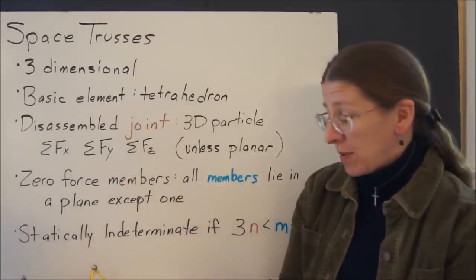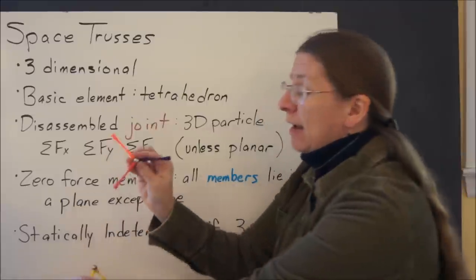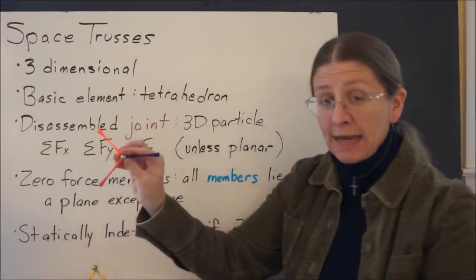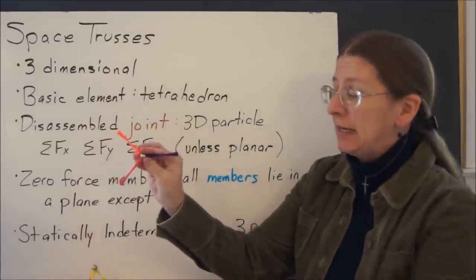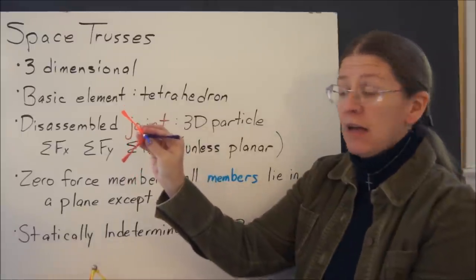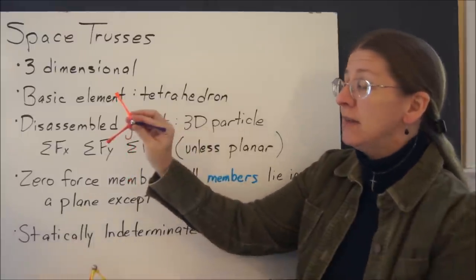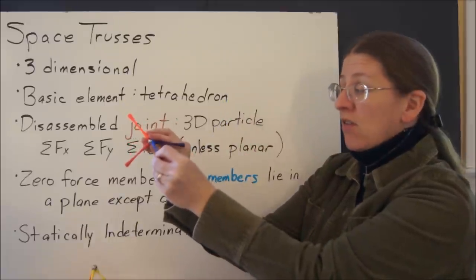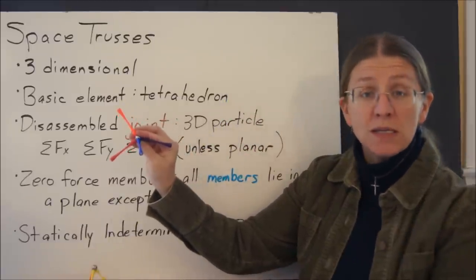How do you make a zero-force member? So if you take a flat plane where all of the members are in a plane except one, this one, if everything else is in a plane except this one, then this one has to be zero for the same reason.